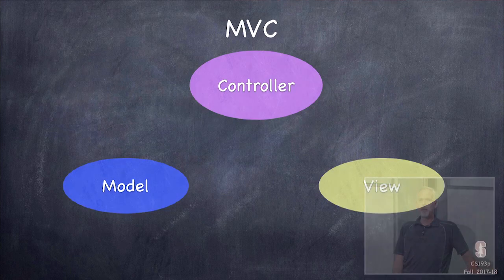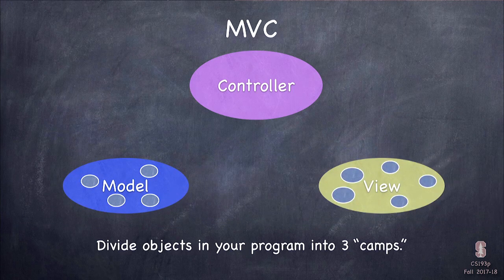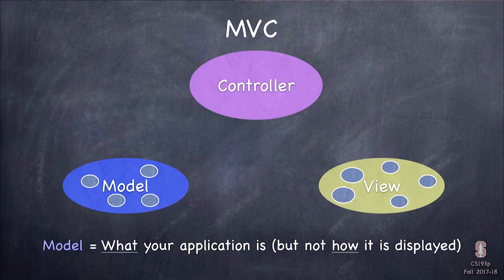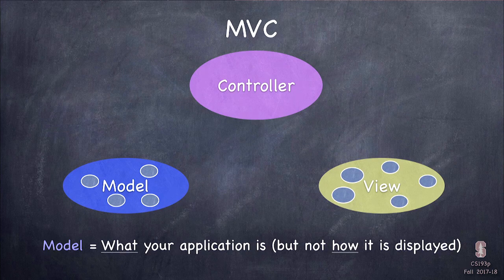Model-View-Controller is essentially a way to divide all objects in our system into three camps. The first is the blue Model camp — a UI-independent set of objects representing the 'what' of your app. For our concentration game, it's the part that knows how to play: it knows how to match cards, take them away, flip cards — all the knowledge about the game, but nothing about how it appears on screen.